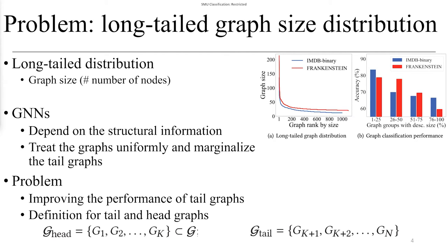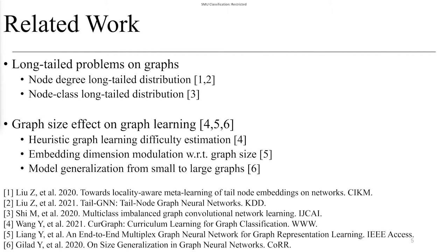In this paper, we investigate the significant yet unexplored problem of size-oriented long-tailed graph classification, particularly improving the performance of tail graphs. We rank all graphs by their sizes in descending order and utilize the top-K largest graphs as the head graphs. Several recent studies investigate node-level long-tailed distribution on graphs, but they focus on distinct problems and can't be directly applied to the multi-graph setting. Several related studies investigate the effect of graph size on graph learning, but none are particularly designed to improve the performance of tail graphs.